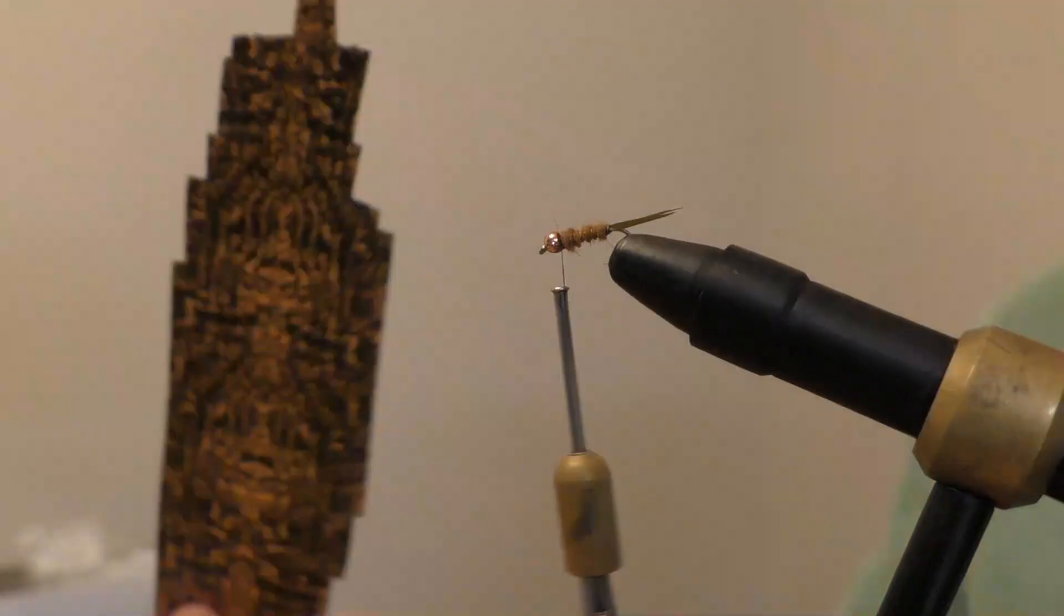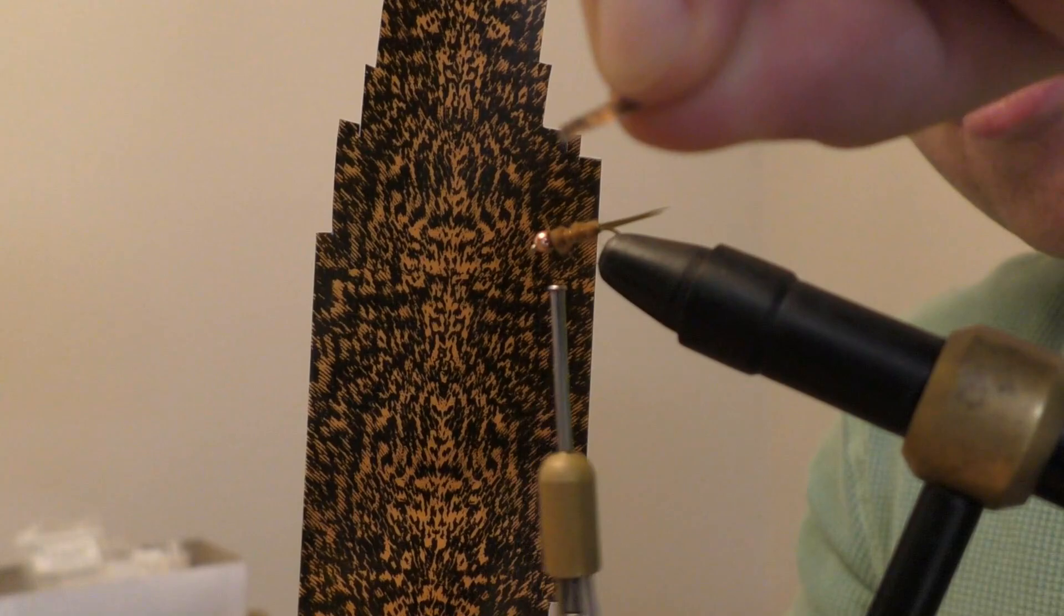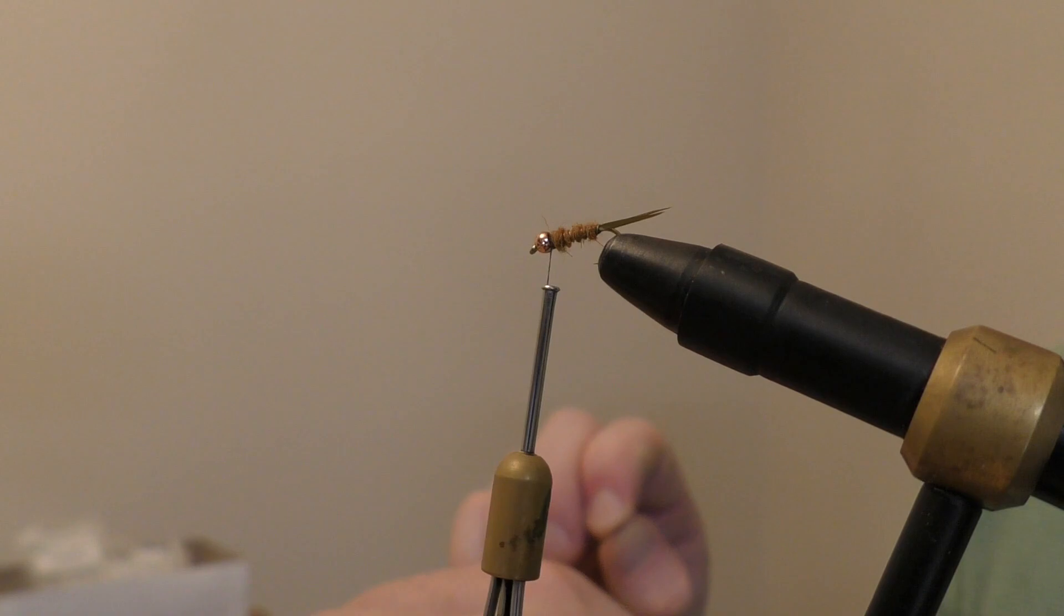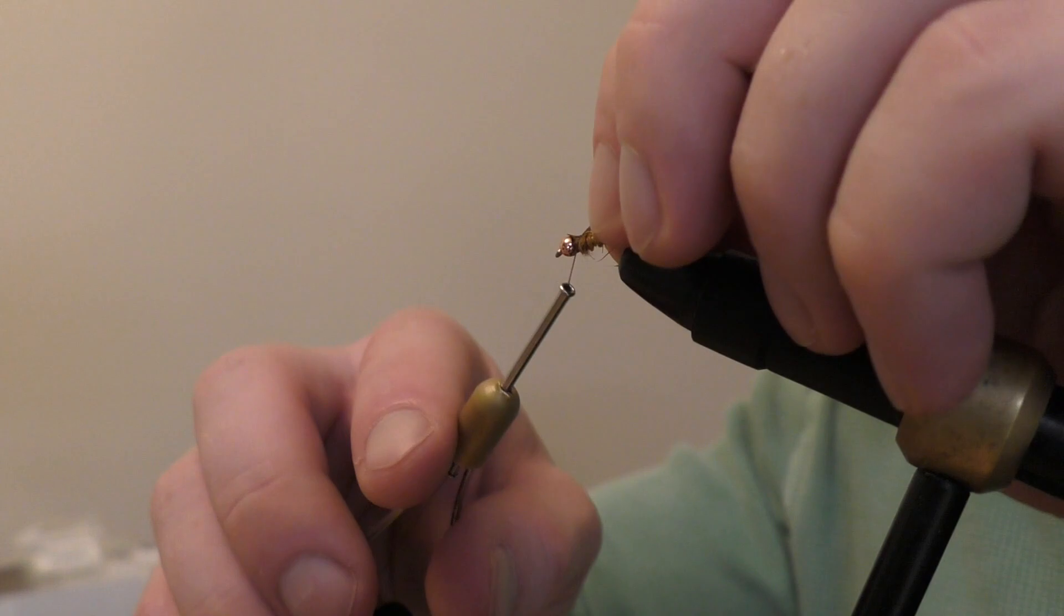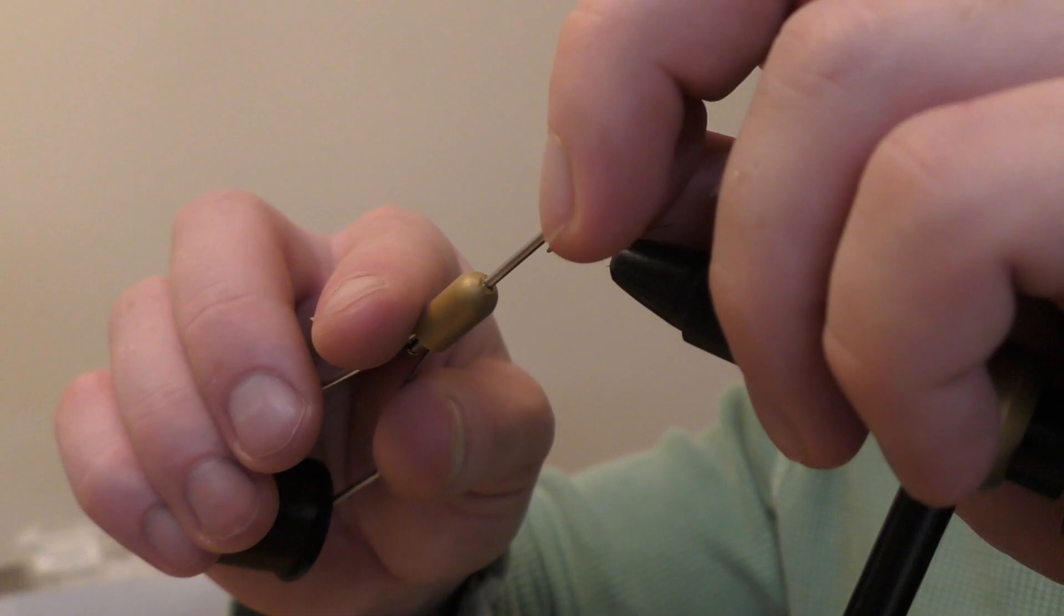Next step: take your thin skin and just cut a small little rectangle. Now if you don't have this, you can use feathers or fibers off of a pheasant tail or whatever. You want to go ahead and tie that in. Make sure it's directly on the top of your fly.